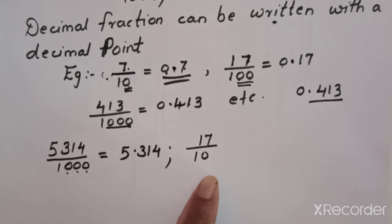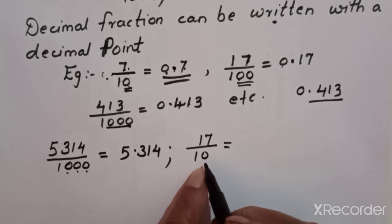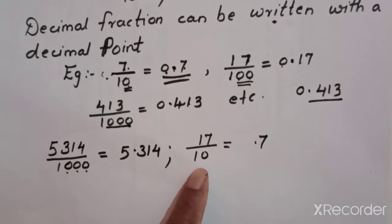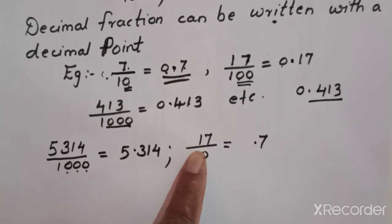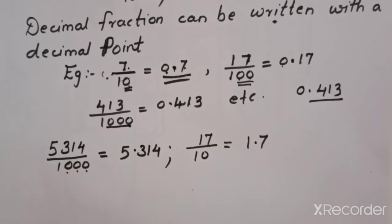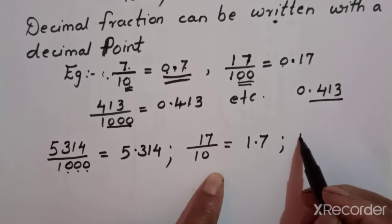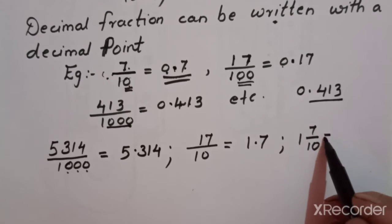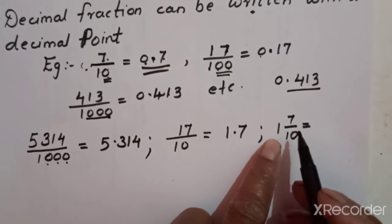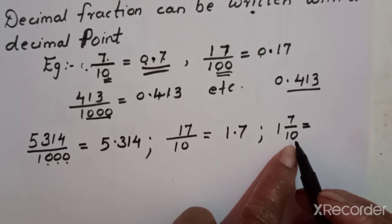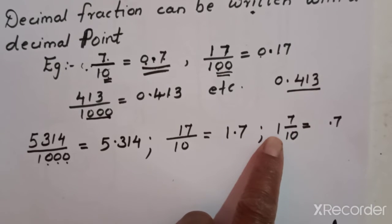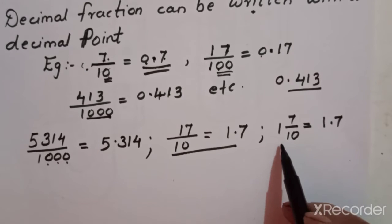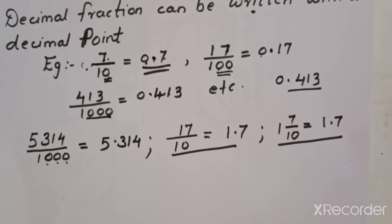Another example: 17 upon 10. Only one zero in the denominator, so one digit after the decimal point. The digit is 7, and 1 is left in the numerator. So the decimal form is 1.7. This is also the same as the mixed number 1 integer 7 upon 10 — these two are the same.